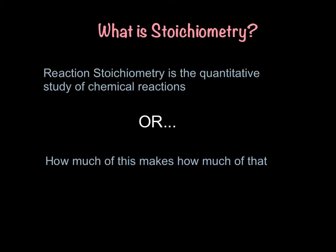First of all, we have to know that stoichiometry has a couple different types. The one we're going to be talking about is reaction stoichiometry. The definition is the quantitative study of chemical reactions. Quantitative means dealing with numbers, and we think of it as just how much of this makes how much of that.